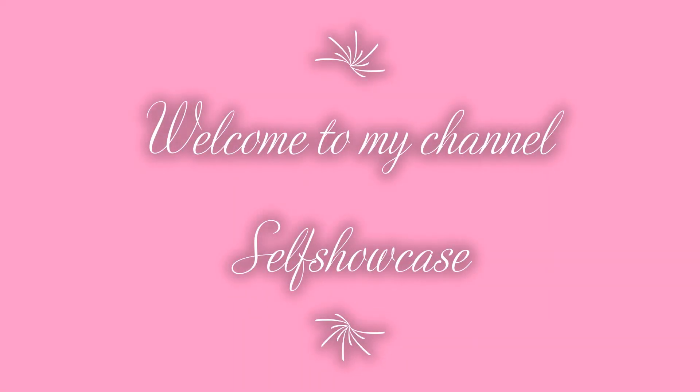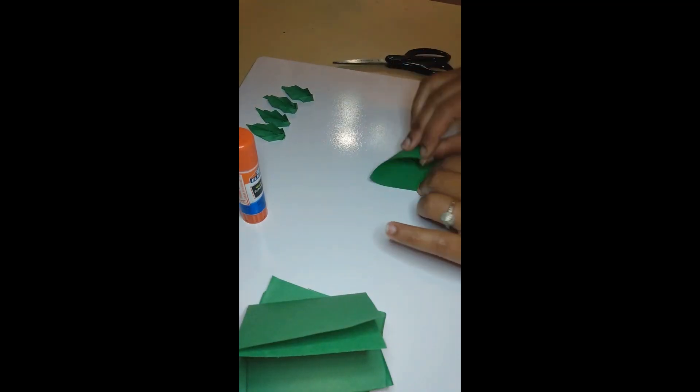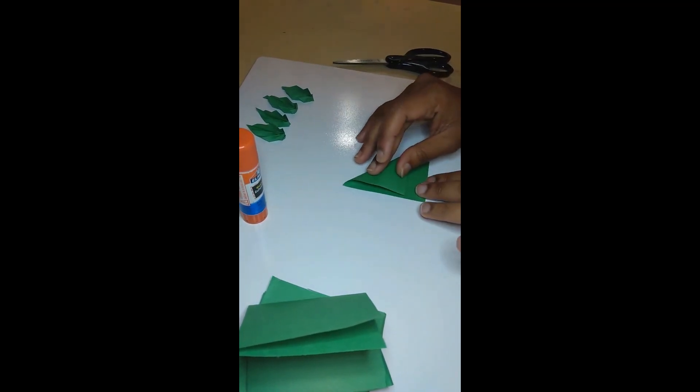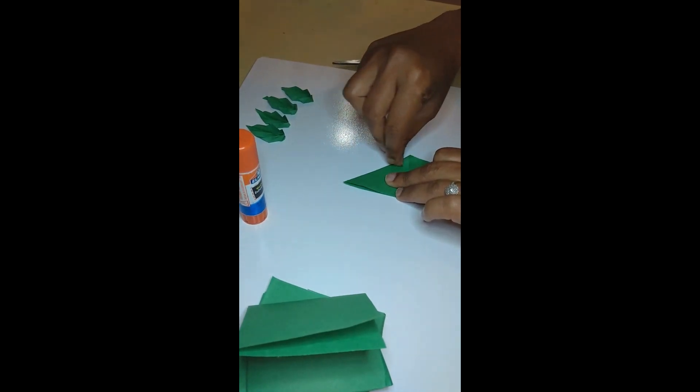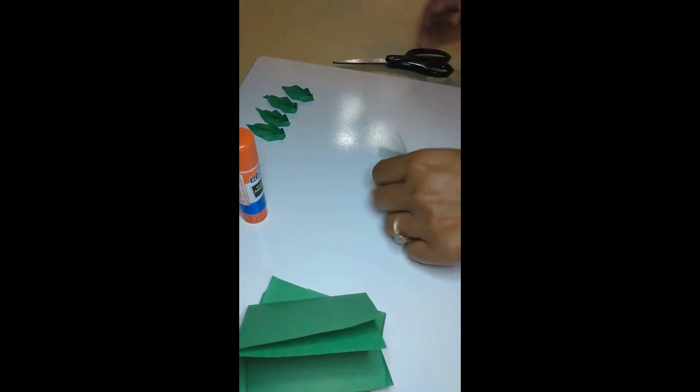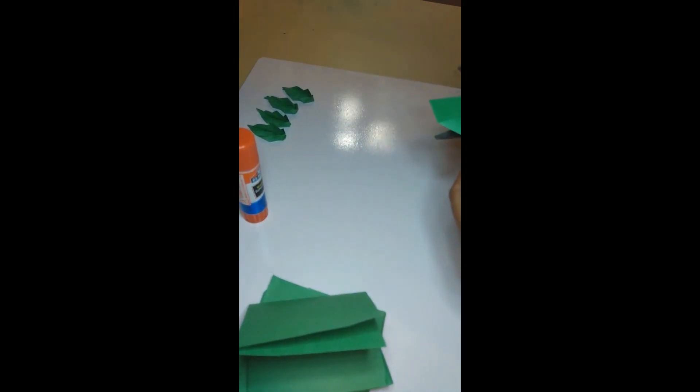Hi everyone, welcome to my channel Self Showcase. Today's video I'm sharing about paper crafts. Let's go to the craft room. Now start with leaf making. Here I took green colored paper, then I fold it in a triangle shape.